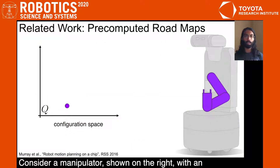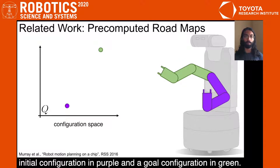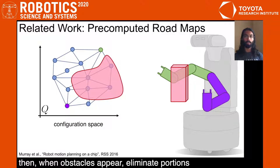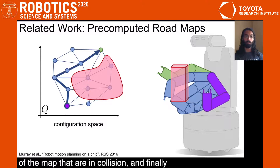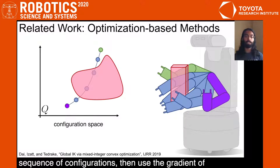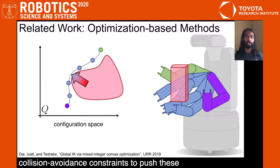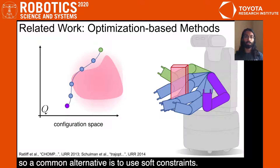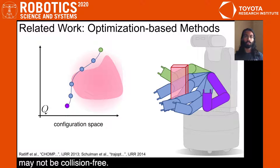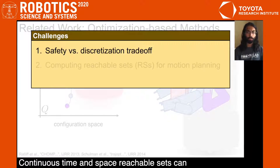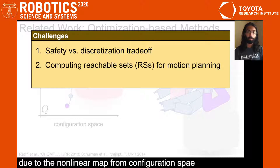Consider a manipulator, shown on the right, with an initial configuration in purple and a goal configuration in green. One method to plan between these two configurations is to pre-compute a roadmap in configuration space. Then, when obstacles appear, eliminate portions of the map that are in collision and finally perform a graph search to find a collision-free path. Since it may be unclear how dense a roadmap is necessary for arbitrary scenarios, an alternative is to use an optimization-based method where one can take an initial guess of a discrete sequence of configurations, then use the gradient of collision avoidance constraints to push these configurations out of collision. Representing such constraints and gradients is challenging, so a common alternative is to use soft constraints. But feasible solutions to such programs may not be collision-free. The challenge with these methods is the trade-off between safety and discretization fineness.